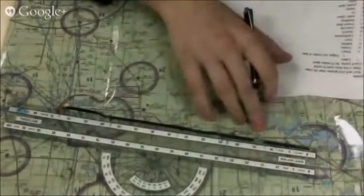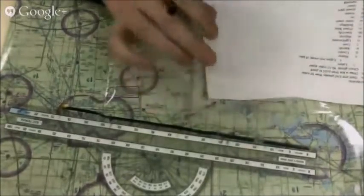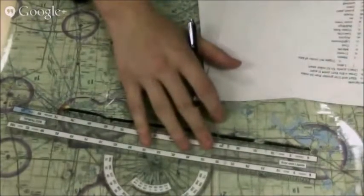Now what I have marked here is the town of Doyen, and that is about 14 miles away. That's a good checkpoint.